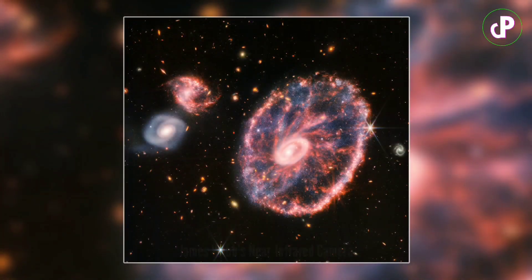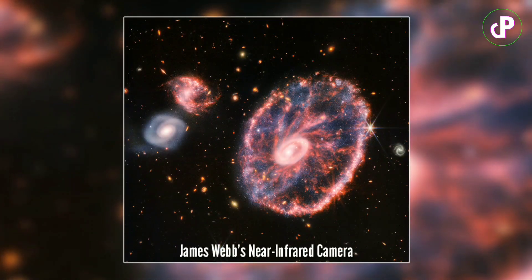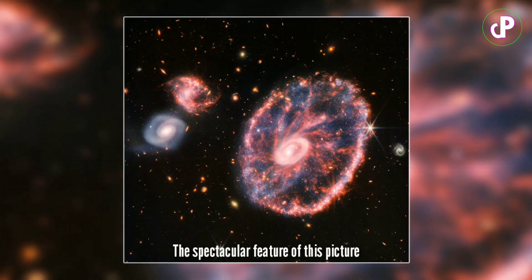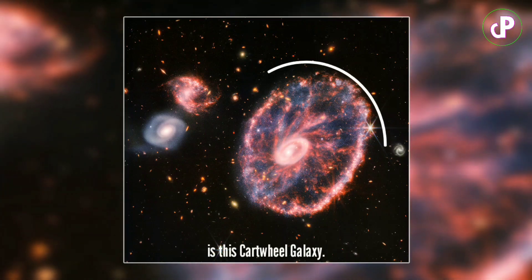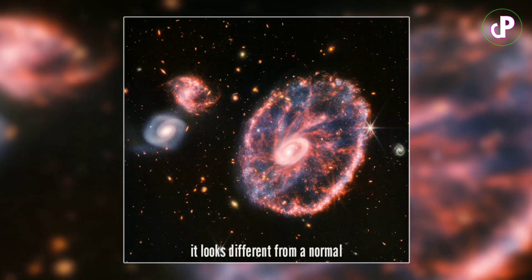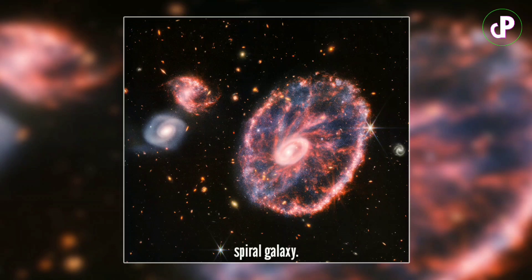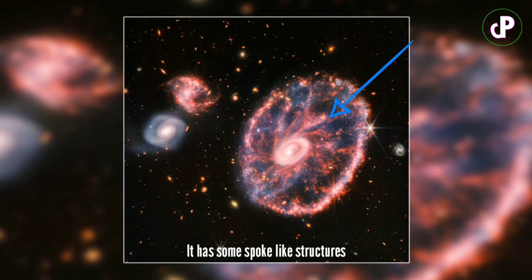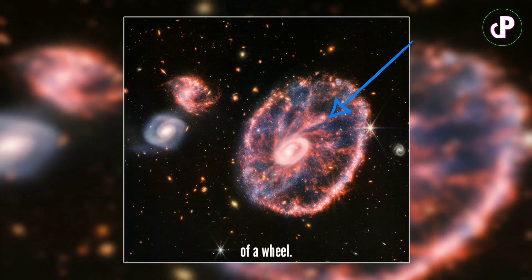This image was taken by James Webb's near-infrared camera or NIRCAM. The spectacular feature is the Cartwheel Galaxy. You can see it looks different from a normal spiral galaxy. It has spoke-like structures which give it an unusual wheel-like appearance.